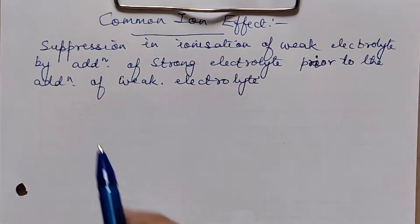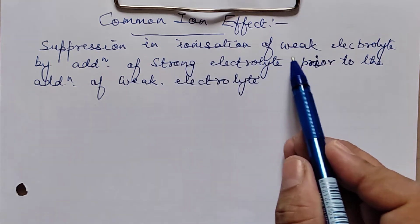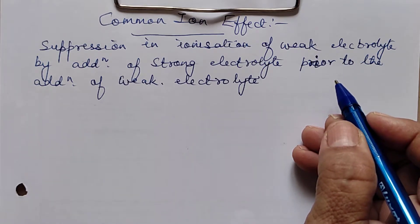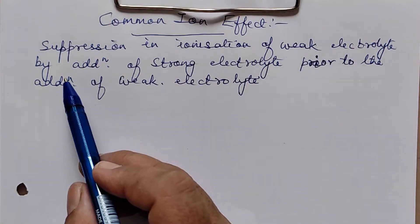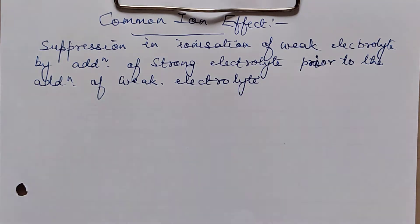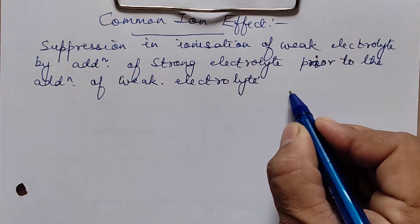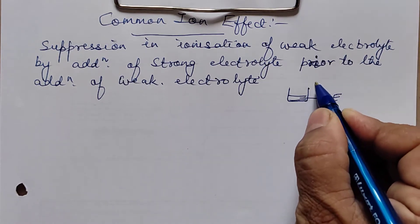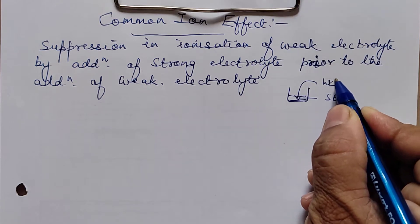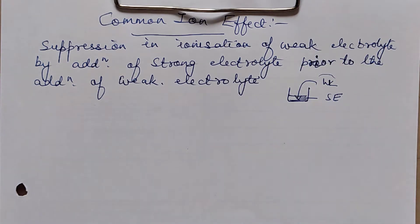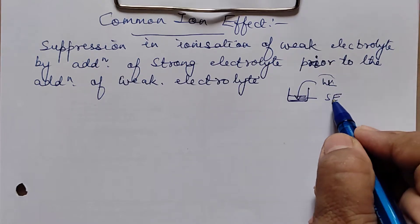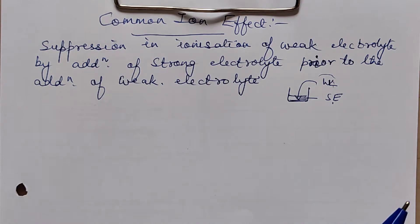Let's first define what the common ion effect is: it is the suppression in the ionization of a weak electrolyte. A weak electrolyte doesn't ionize to a greater extent. We further suppress its ionization by addition of a strong electrolyte prior to the addition of the weak electrolyte — that means we first take a strong electrolyte in a container, and then add the weak electrolyte to it.